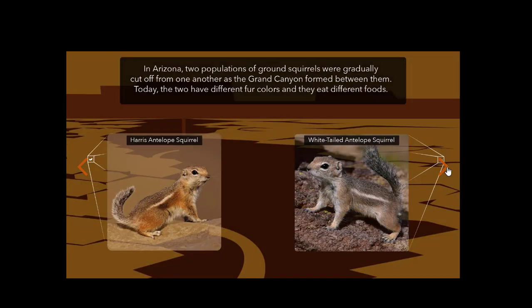In Arizona, two populations of ground squirrels were gradually cut off from one another as the Grand Canyon formed between them. Today, the two have different fur colors and they eat different foods.